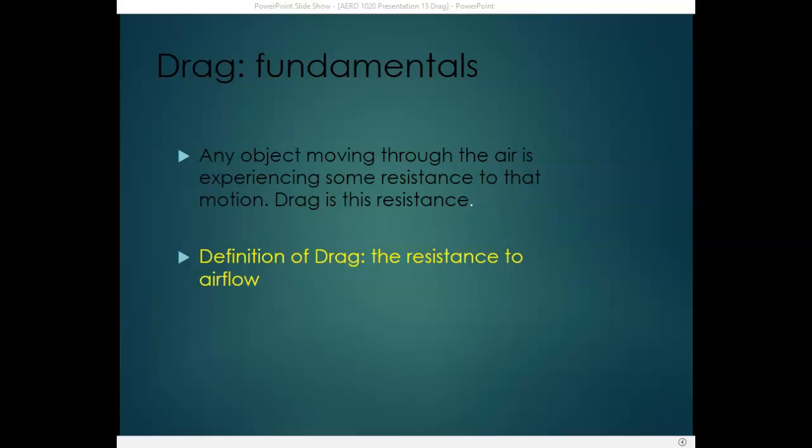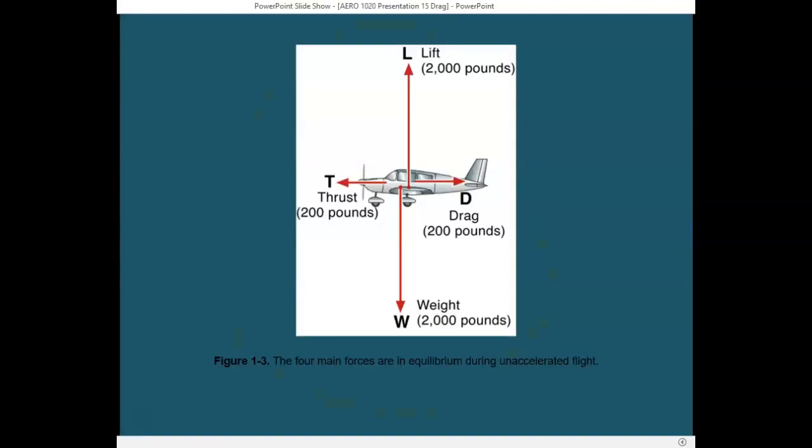In addition to velocity contributing to dynamic pressure, air density also has an effect. At the same airspeed, low density air will create low dynamic pressure compared to high density air. So any object moving through air, which has mass, is going to experience some resistance to that motion. That resistance is drag — the resistance to airflow. When thrust equals drag, the airplane is in unaccelerated flight.